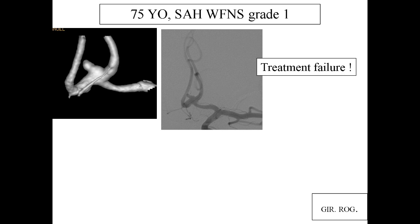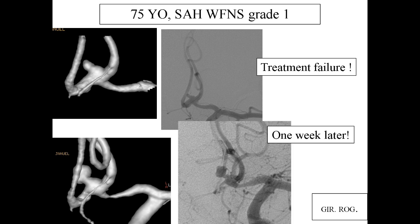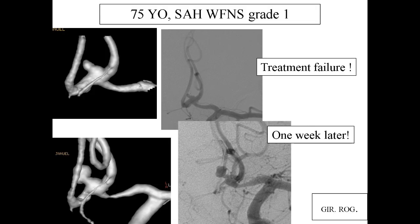Case five: a 75-year-old patient with grade 1 SAH with a blister of the ACOM complex. The first treatment attempt was too difficult — it was impossible to stabilize even one coil in the bleb. We stopped the procedure and waited. One week later, the false aneurysm had increased in size, and at that point it was possible to treat the aneurysm selectively.